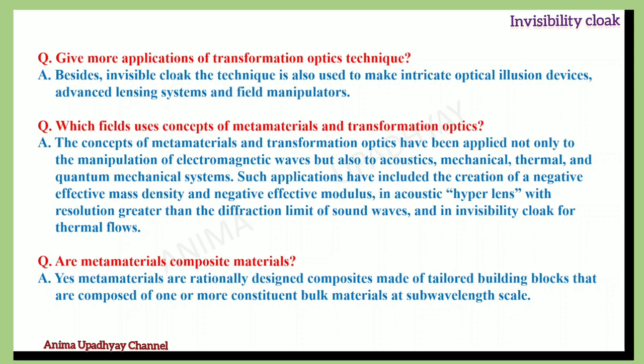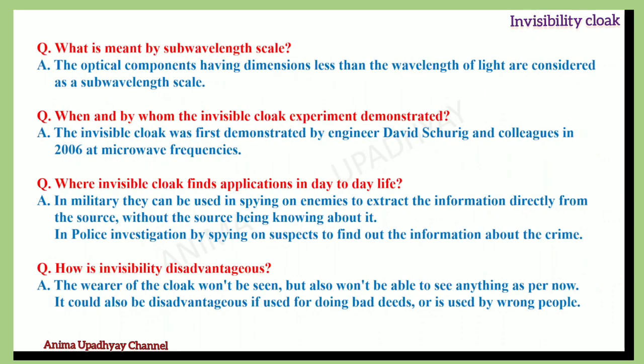Are metamaterials composite materials? Yes. Metamaterials are rationally designed composites made of tailored building blocks composed of one or more constituent bulk materials at sub-wavelength scale — optical components having dimensions less than the wavelength of light. The invisibility cloak experiment was first demonstrated by David Schurig and colleagues in the year 2006 at microwave frequencies.